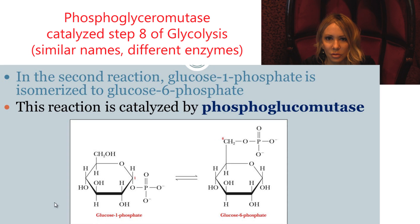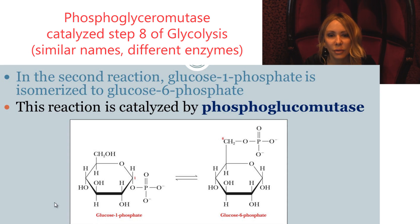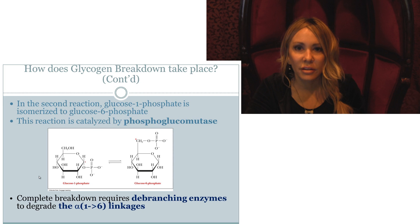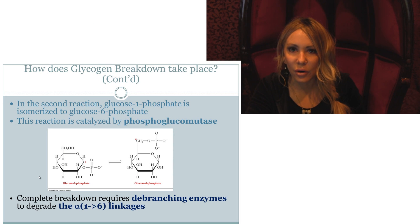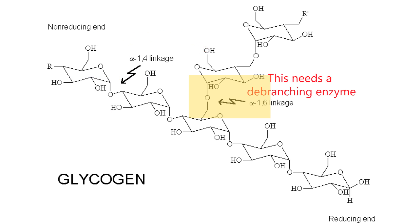The second reaction is catalyzed by phosphoglucomutase — don't get that confused with phosphoglyceromutase. When we get to the branch molecules of glycogen, the alpha-1-6 linkages, we're going to require a debranching enzyme. This takes care of the alpha-1-6 linkages, while the rest of the molecule has alpha-1-4 linkages, which glycogen phosphorylase can easily handle.